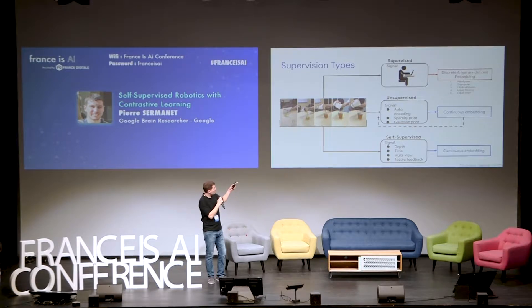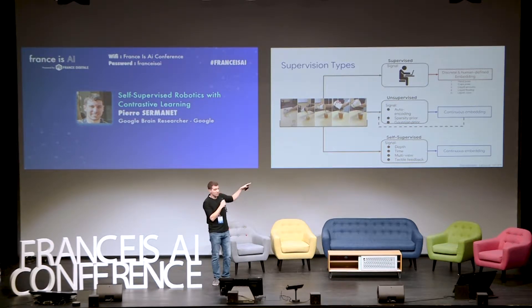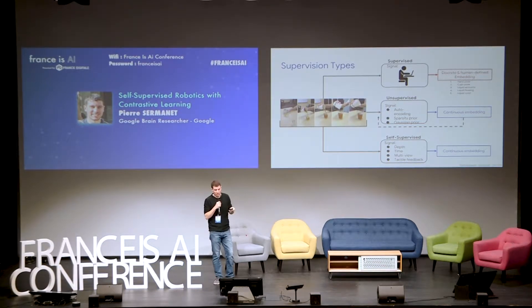Then you have unsupervised learning, which is often about trying to reconstruct the input after applying some sparsity priors on the outputs. And then you have self-supervised learning, which is a subset of unsupervised learning, but it's more about finding automatic ways to find labels so that you can extract signals, such as depth or time. What these two unsupervised learning approaches have in common is that they usually produce more complete and continuous representations that are not going to be biased or limited by humans.